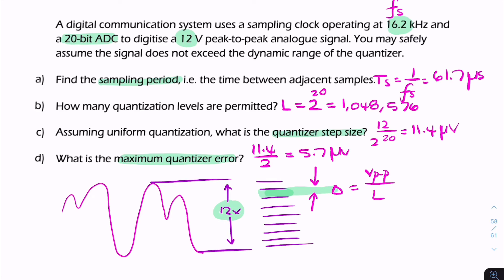So we can calculate the maximum quantizer error by finding the step size of the quantizer and then simply dividing by 2. That is your final answer.